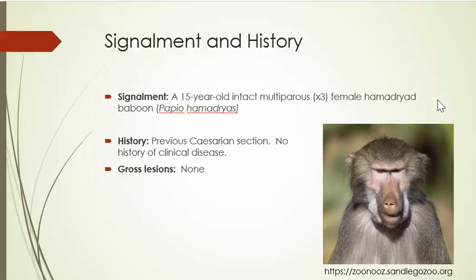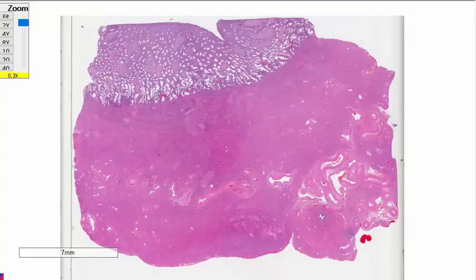This tissue is from a 15-year-old intact multiparous female Hamadryas baboon, which means she had three babies at 11, 12, and 14 years of age, and one of them was delivered by cesarean section. She had no history of clinical disease and no gross lesions associated with the reproductive tract at autopsy.